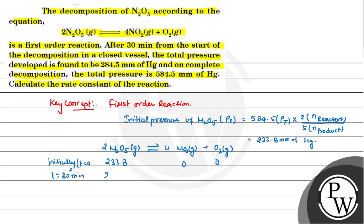If x amount reacts, then 4 by 2 times x, which is 2x, will be produced, and this will be x by 2. So from here, total pressure after 30 minutes, which is given as 284.5 mm of Hg.